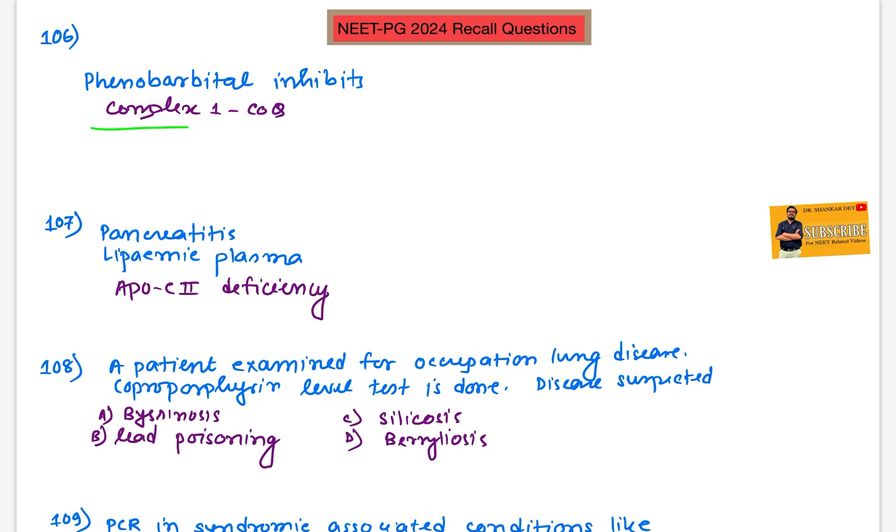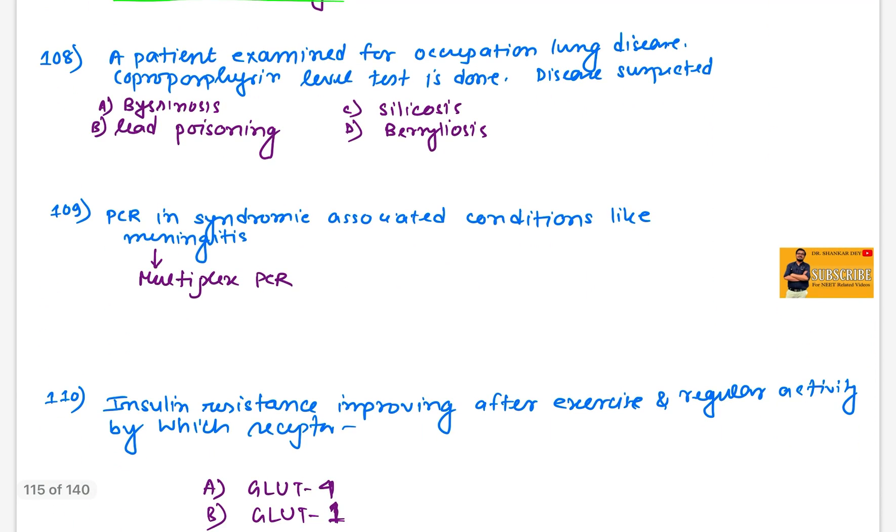Question 106: Phenobarbital inhibits - yes, it inhibits complex one coenzyme, complex one CoQ. This is phenobarbital chemical objection. Question 107: Patient of pancreatitis with lipemic plasma - answer will be apo-C2 deficiency.